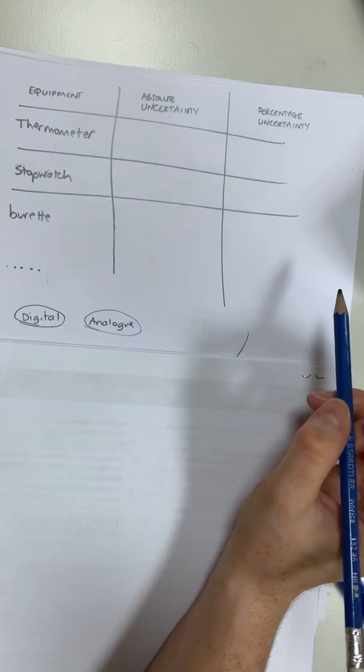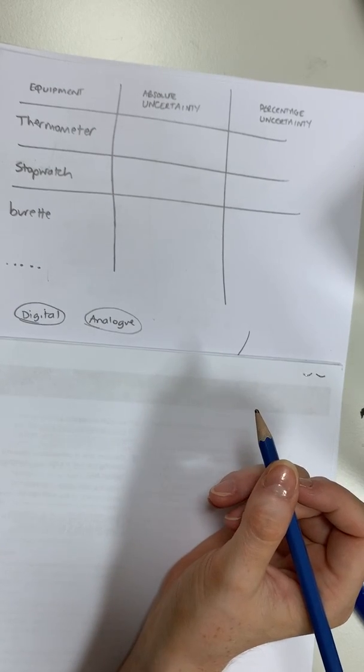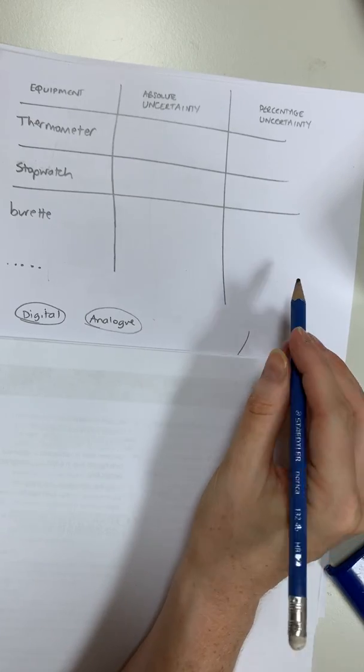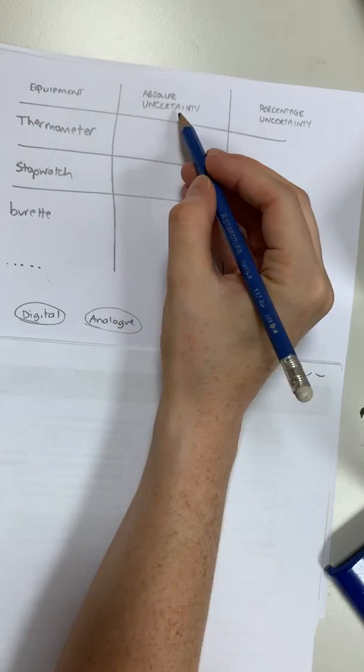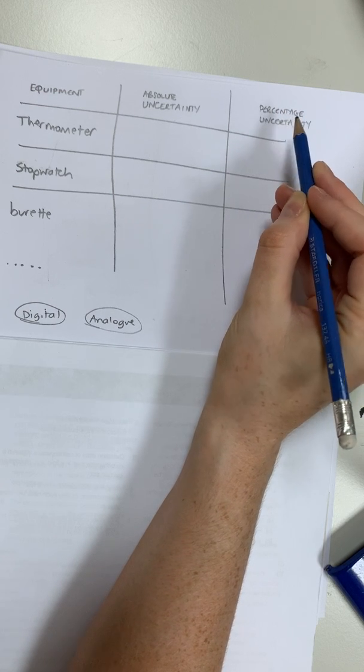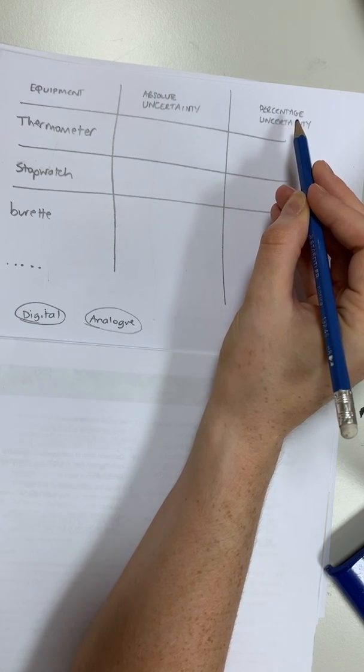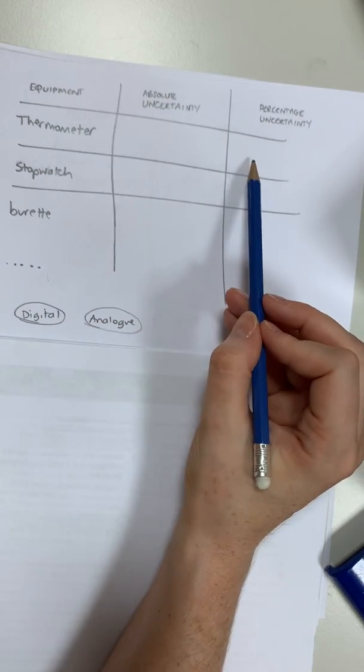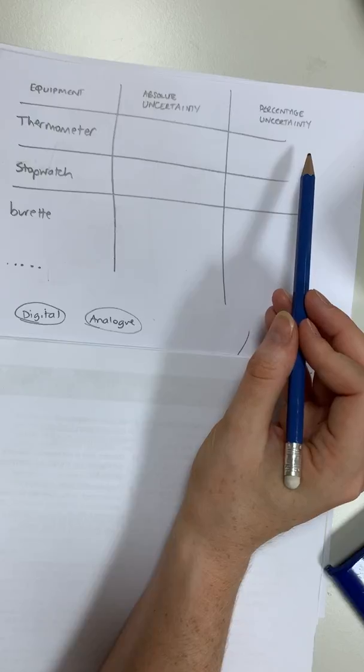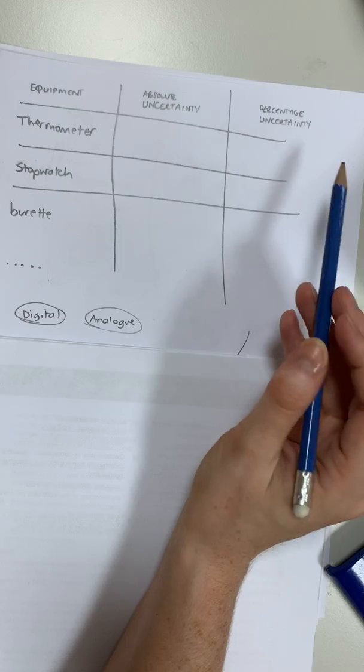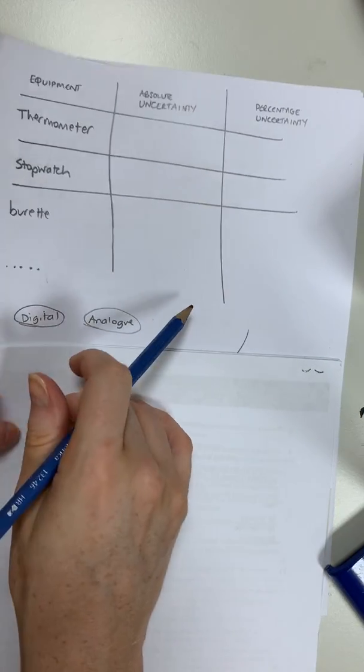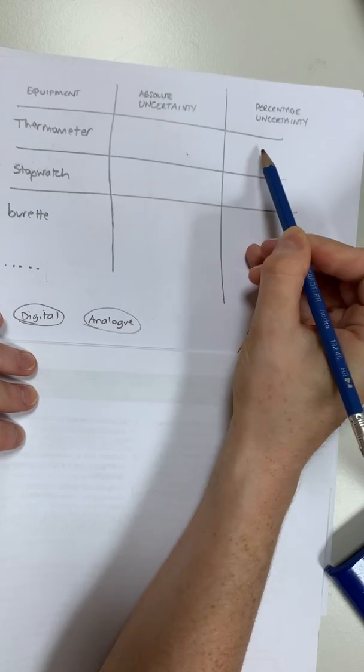Now we need to think about converting that absolute uncertainty to a percentage uncertainty. For each piece of equipment, you probably will want to think about the fact that percentage uncertainty takes into account what your absolute uncertainty is relative to what you are trying to measure. You'll want to consider the fact that you will, for example, have used that thermometer to measure a variety of different temperatures, which means do you take your highest value, do you take your lowest value, do you take your average? These are the things that you need to think about when converting this absolute value into a percentage.